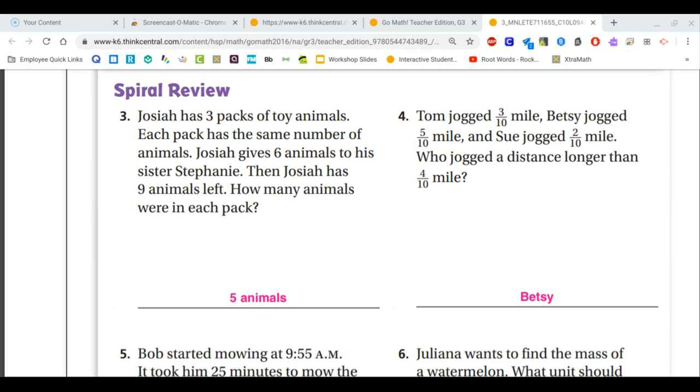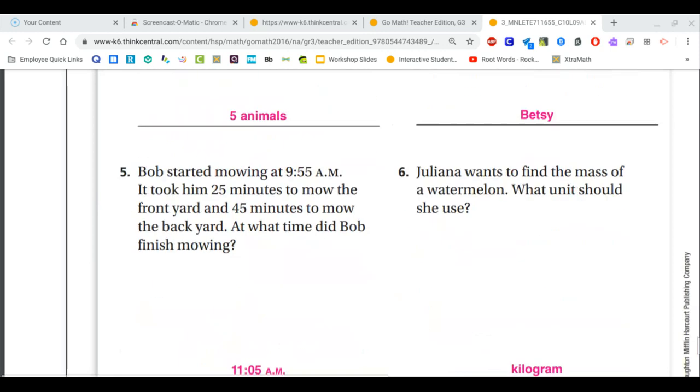For number four, Tom jogged three tenths of a mile, Betsy jogged five tenths and Sue jogged two tenths. So who jogged a distance longer than four tenths of a mile? When comparing, we always look at the denominator first. Since all of our denominators are the same, now we just look at our numerator. Which numerator is larger than four? That would be five tenths, and the person that jogged that much was Betsy.